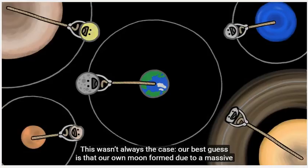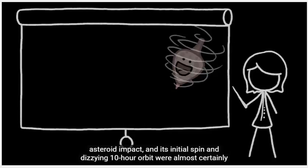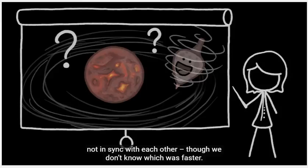This wasn't always the case. Our best guess is that our own Moon formed due to a massive asteroid impact, and its initial spin and dizzying 10-hour orbit were almost certainly not in sync with each other – though we don't know which was faster.